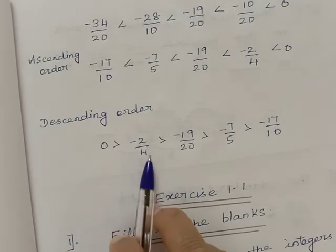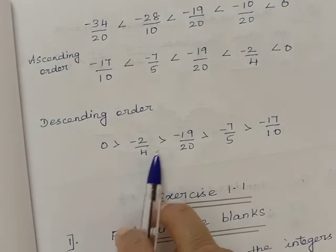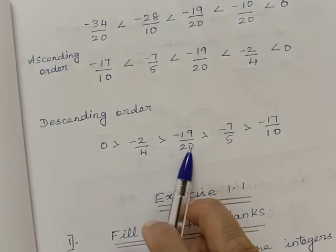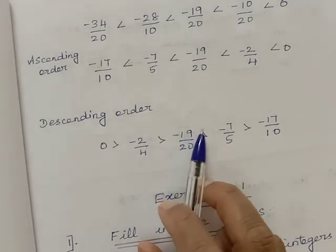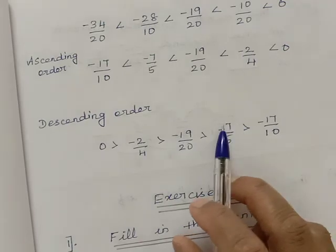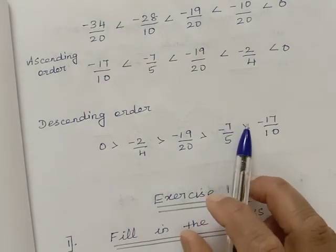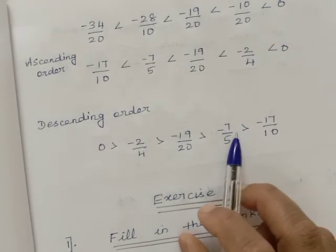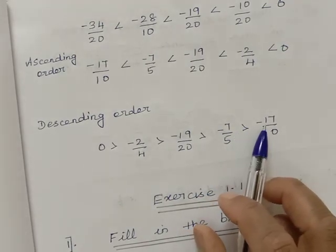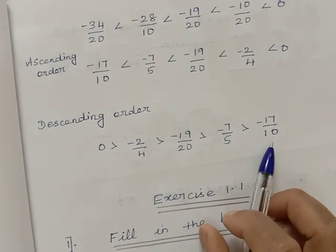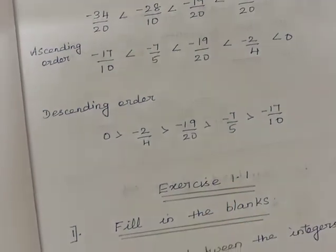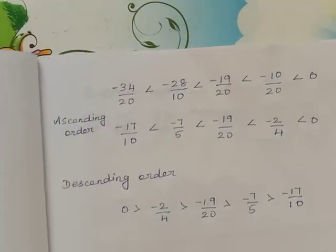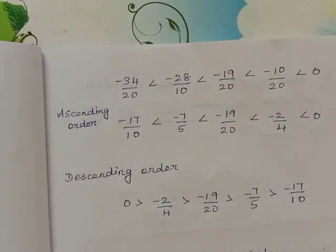Descending order: 0 is greater than minus 2 by 4, minus 2 by 4 is greater than minus 19 by 20, minus 19 by 20 is greater than minus 7 by 5, and minus 7 by 5 is greater than minus 17 by 10. Thank you children.